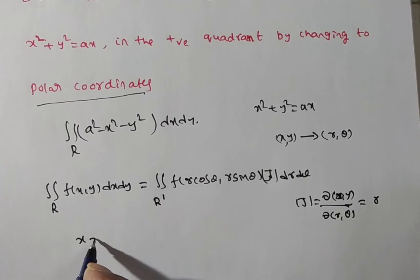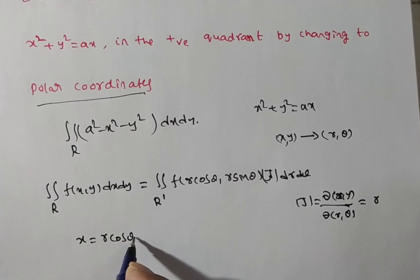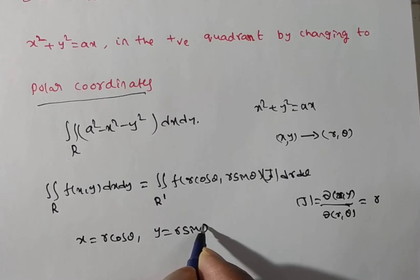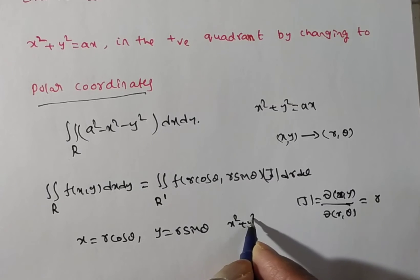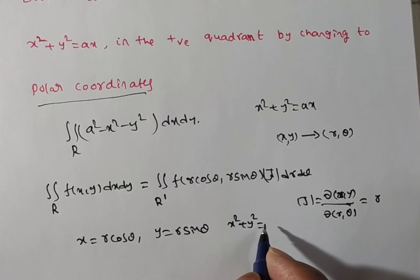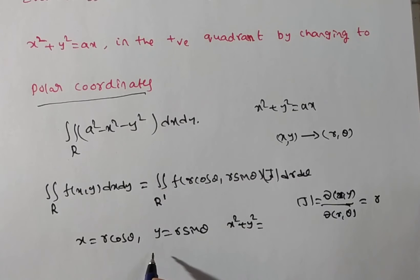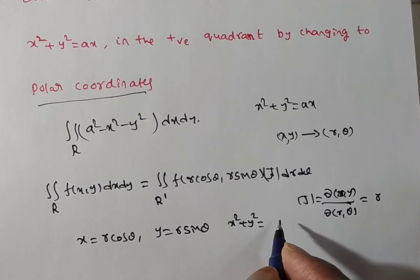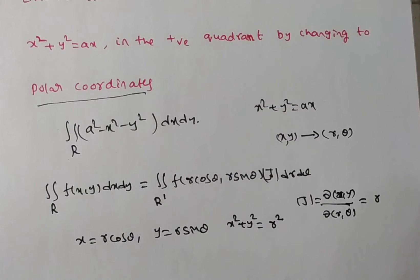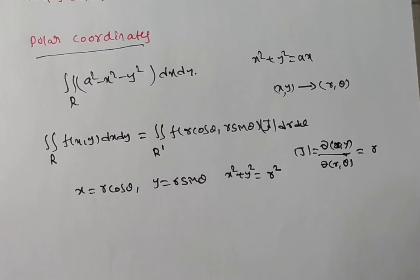In place of x we substitute r cosθ, in place of y we substitute r sinθ. Then x² + y² = r² cos²θ + r² sin²θ. Taking r² as common, we get cos²θ + sin²θ = 1. Hence x² + y² = r².